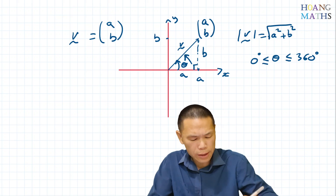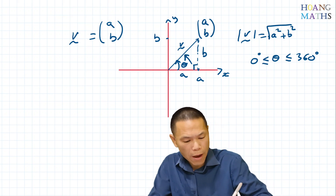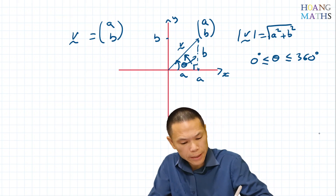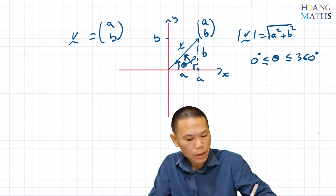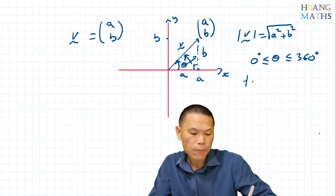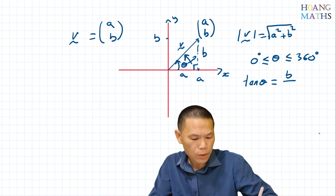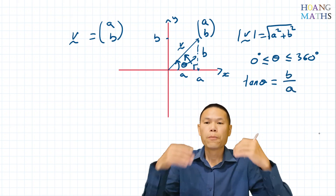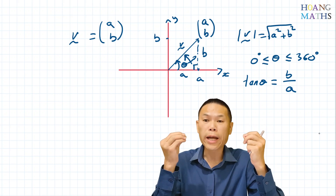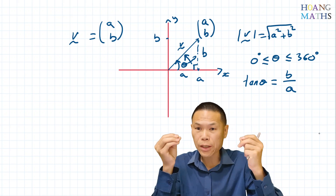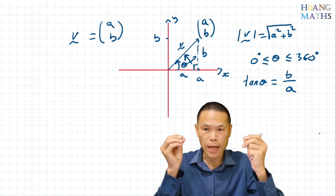To work out this, we have the opposite side and the adjacent side. Therefore to work out angle theta, tan θ equals opposite, which is B, over adjacent, which is A. This is how you work out the magnitude and directions of a vector.